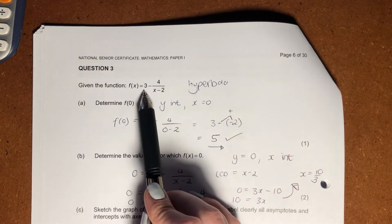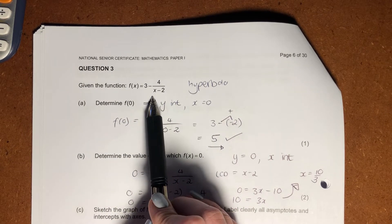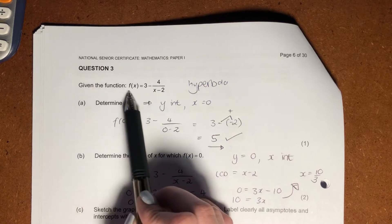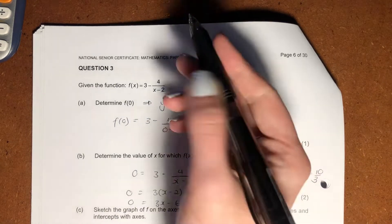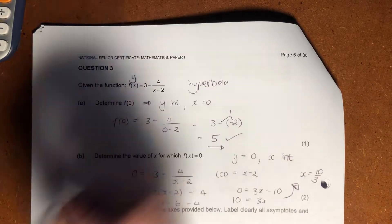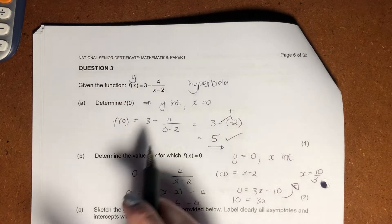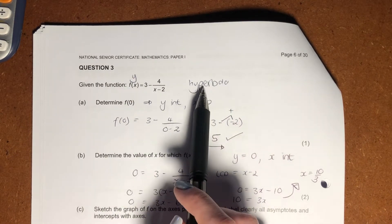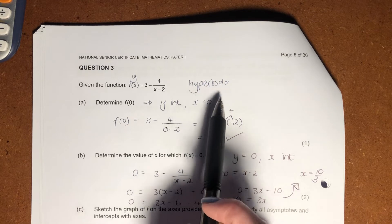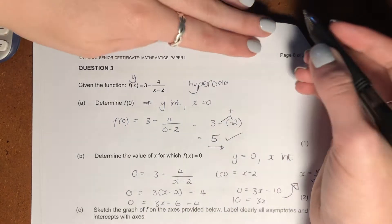It says f of x equals 3 minus 4 over x minus 2. Importantly here, please make sure that you're familiar with f of x, your functional notation, just a different way of saying y. This type of function is a hyperbola. What does that mean? It just means that it has a specific view.